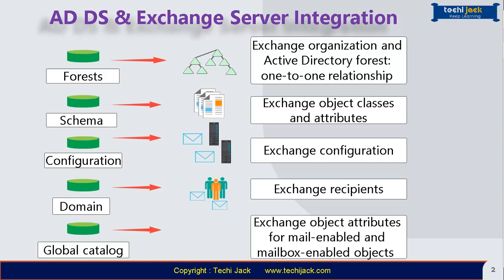The Exchange Server installation process modifies the schema partition to enable the creation of Exchange-specific objects, and also adds Exchange-specific attributes to existing objects. For example, the installation process updates user objects with additional attributes describing quota storage and mailbox features — these additional classes and attributes are added to existing objects.